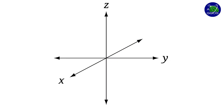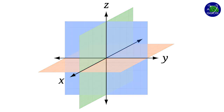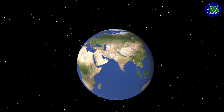Schematically, a terrestrial reference frame is a gridded mesh with three perpendicular axes — X, Y, and Z — co-moving with the Earth.